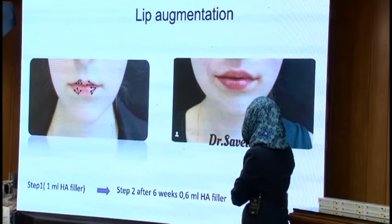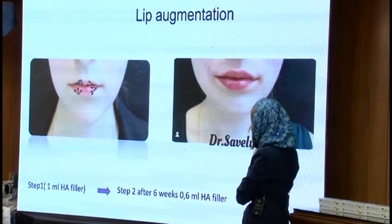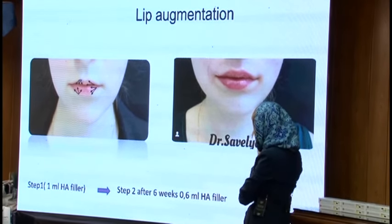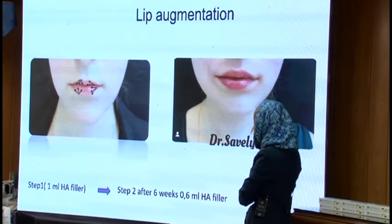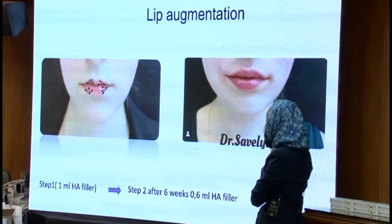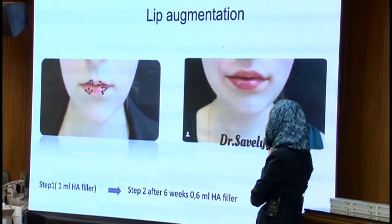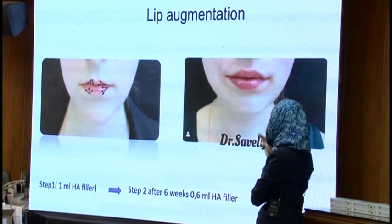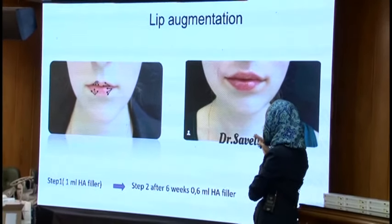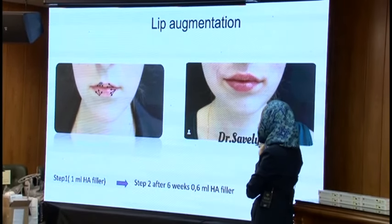This is injection in two steps. If the patient has thin lips, I prefer to make the injection in two steps. The first step: one milliliter of HA filler. The second step after, in this case, approximately six weeks later.